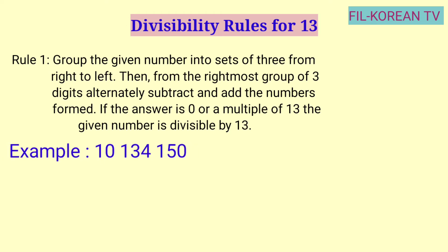Example: 10,134,150. Alamin natin kung itong number na ito ay divisible by 13 — pwedeng i-divide sa 13 at eksakto yung answer, walang remainder. Gamitin natin itong rule number 1. I-group natin ang number by 3 galing sa kanan papunta sa kaliwa. Ito yung first group, second group, at third group.